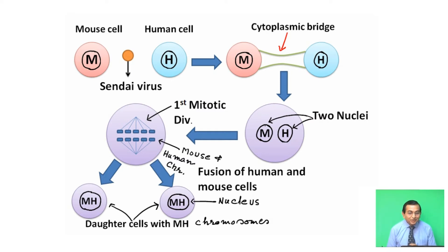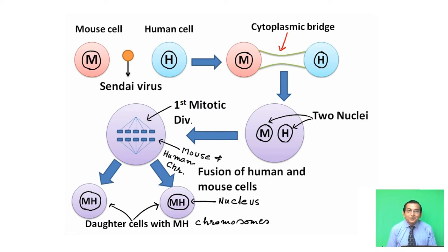Mouse and human cells are selected because they belong to the same group, that is, mammals. Secondly, cytologically their chromosomes can be demarcated: in the case of mouse, small acrocentric chromosomes are present, while in human, chromosomes are of all types — metacentric, sub-metacentric, acrocentric, etc.